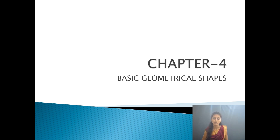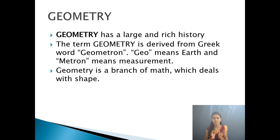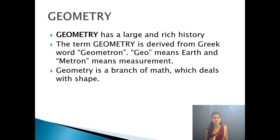What is meant by geometry? Geometry has a large and rich history. 'Geo' means earth and 'metron' means measurement. So why is it about earth measurement? Because earth also has a round shape — it has a shape. This subject is completely based on shapes.